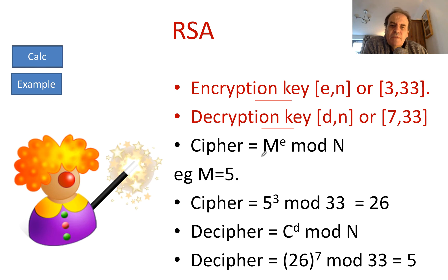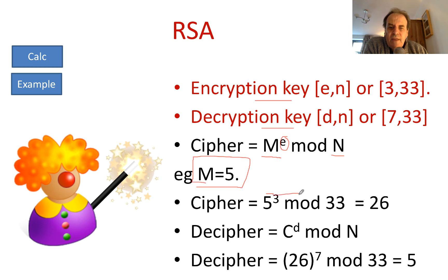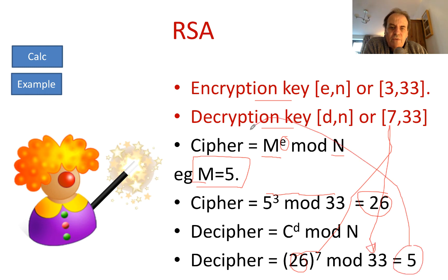We use an exponential cipher. For encryption, we take our message, raise it to the power of E, and take mod N. For decryption, we take the ciphertext to the power of D, mod N. So with a message of 5: 5 to the power of 3, mod 33 gives us 26. Then 26 raised to the power of 7, mod 33 gives us back 5. The values match — it works.